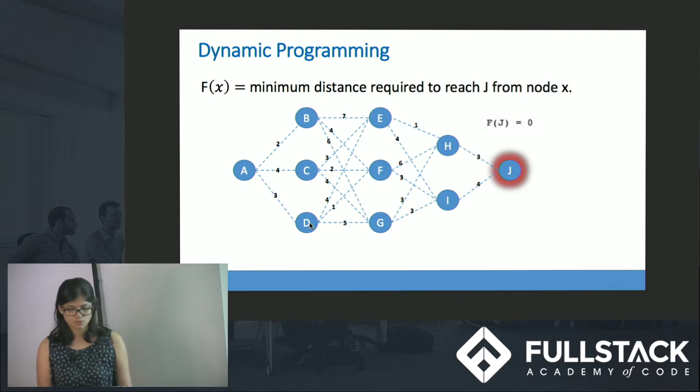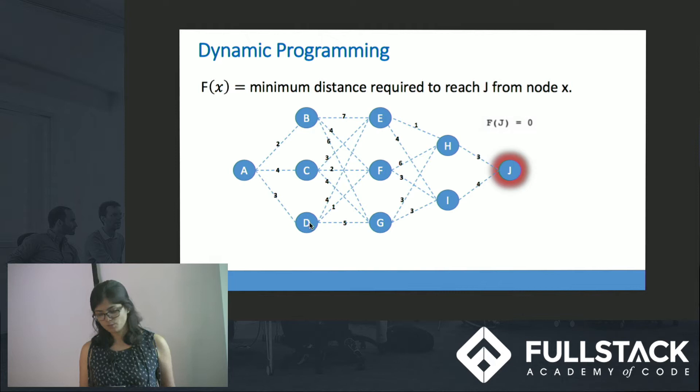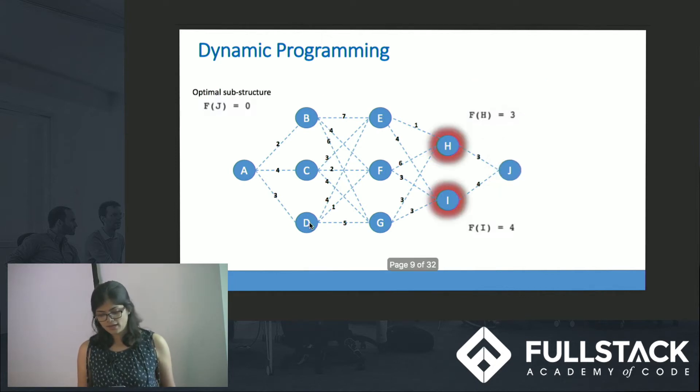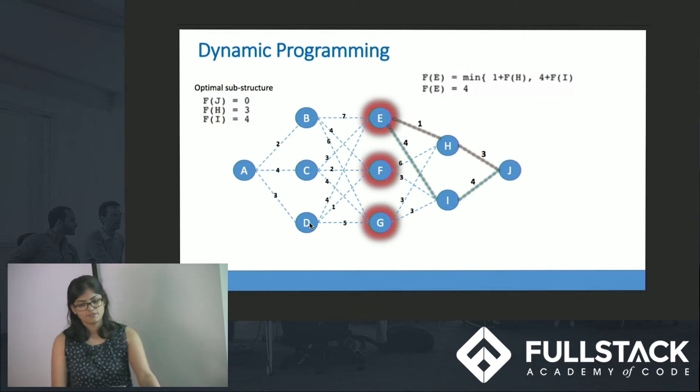Let us go with the first node which is J itself, so f(j) is 0. Next is f(h) and f(i), there is only one edge so f(h) is 3 and f(i) is 4. For f(e) we have two paths: one is from E to H and H to J, and from E to I and I to J. But dynamic algorithm selects the minimum out of those two, in this case it is E to H and H to J.